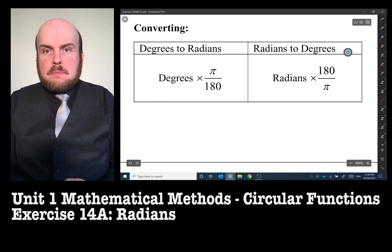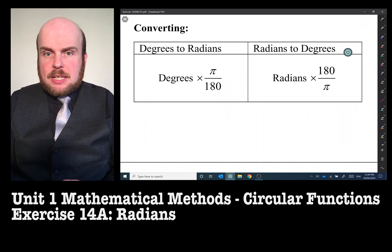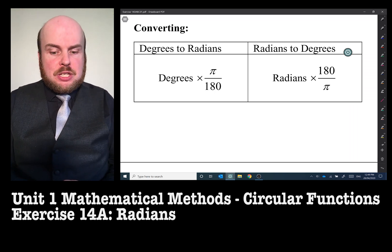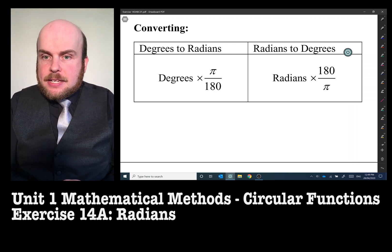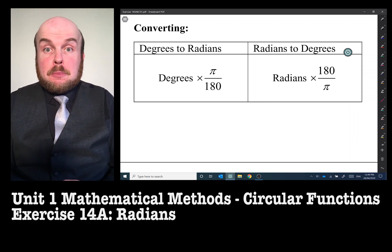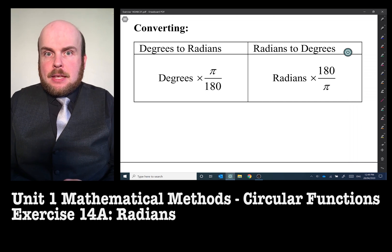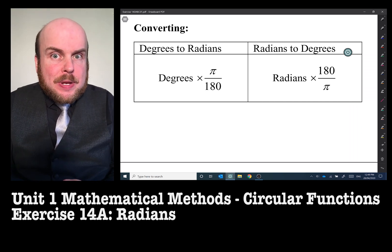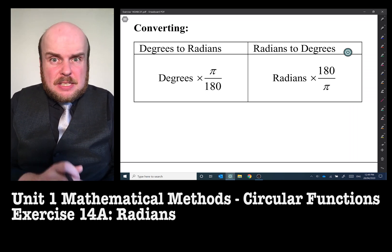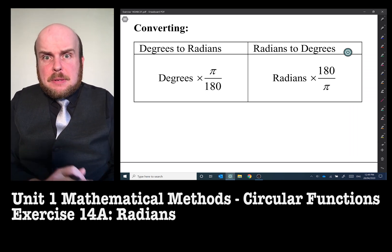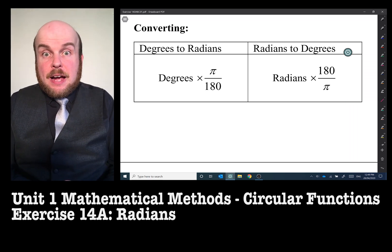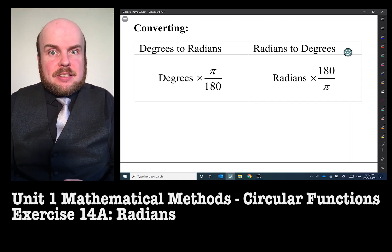To convert between degrees and radians we use these formulas. To get from degrees to radians we simply multiply the degrees by π over 180, and to get from radians back into degrees we multiply it by 180 over π. The way I tend to remember is that radians tend to have a π in them somewhere, so I'll need to times it by π, whereas degrees don't usually have the letter π, so I need to divide it out.